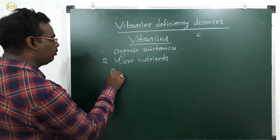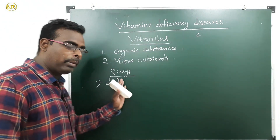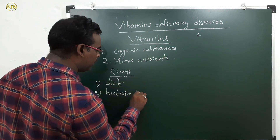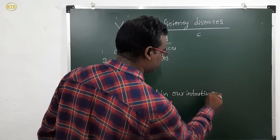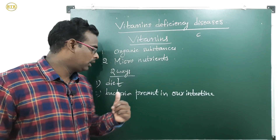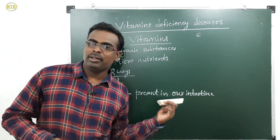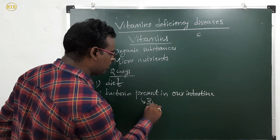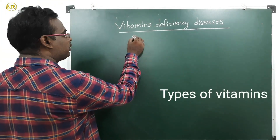We get vitamins by two ways. First, through our diet — the food materials we eat. Second, from bacteria present in our intestine. Some bacteria grow in the intestine and they are helpful to our body; they produce vitamins. The vitamin produced by intestinal bacteria is B12, also called cyanocobalamin.